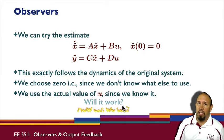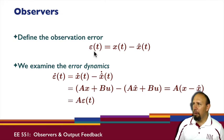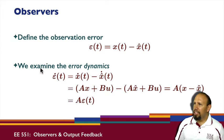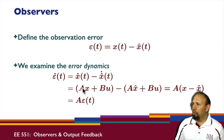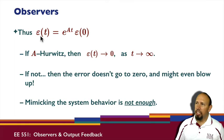Theoretically this should give us some value, but the question is: will it work? If we define the observation error as the difference between x and x-hat, we'd ideally like this to converge to zero. We examine the error dynamics - the differential equation associated with the error. Differentiating the error we get x-dot minus x-hat-dot. x-dot equals Ax + Bu, and x-hat-dot is Ax-hat + Bu. Because we have the same u term, those cancel, and we can factor out A to get x minus x-hat - which is exactly the error. So the error dynamics are: error-dot equals A times the error.